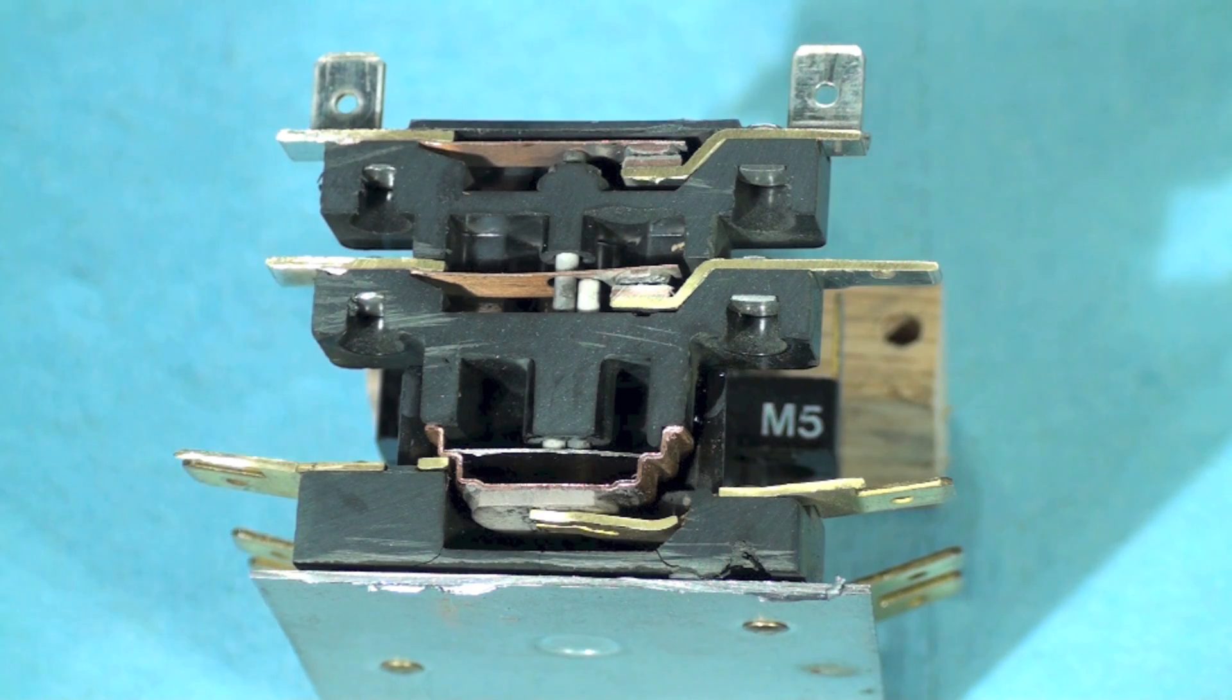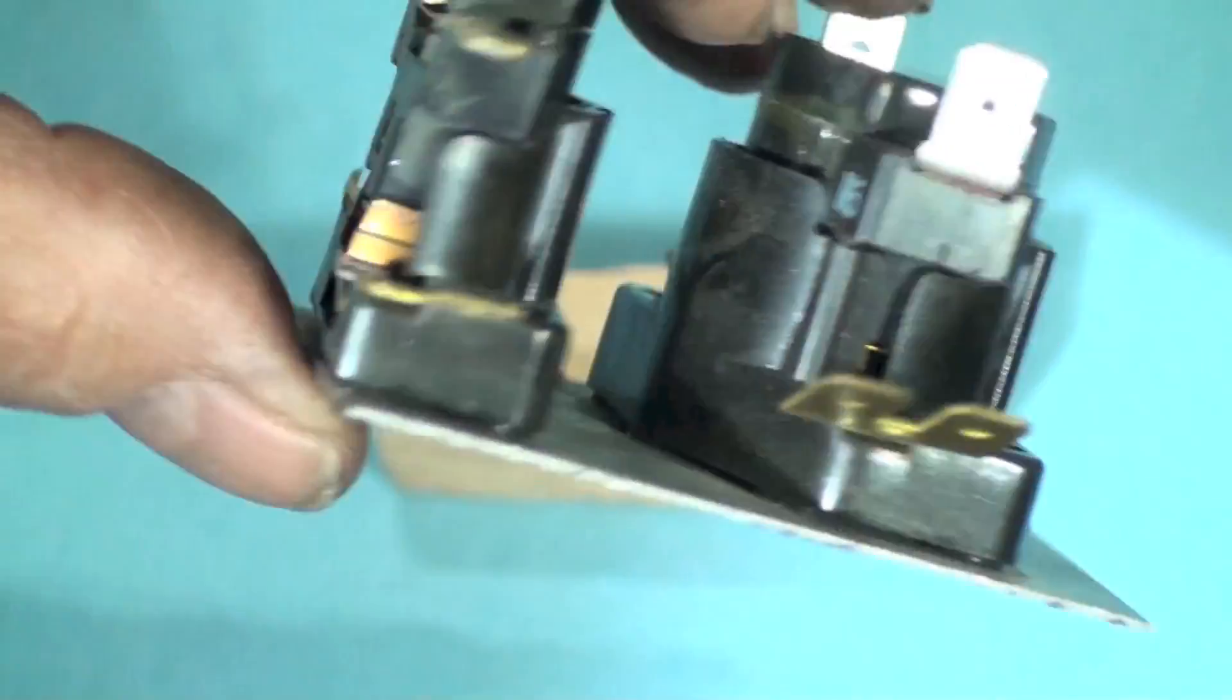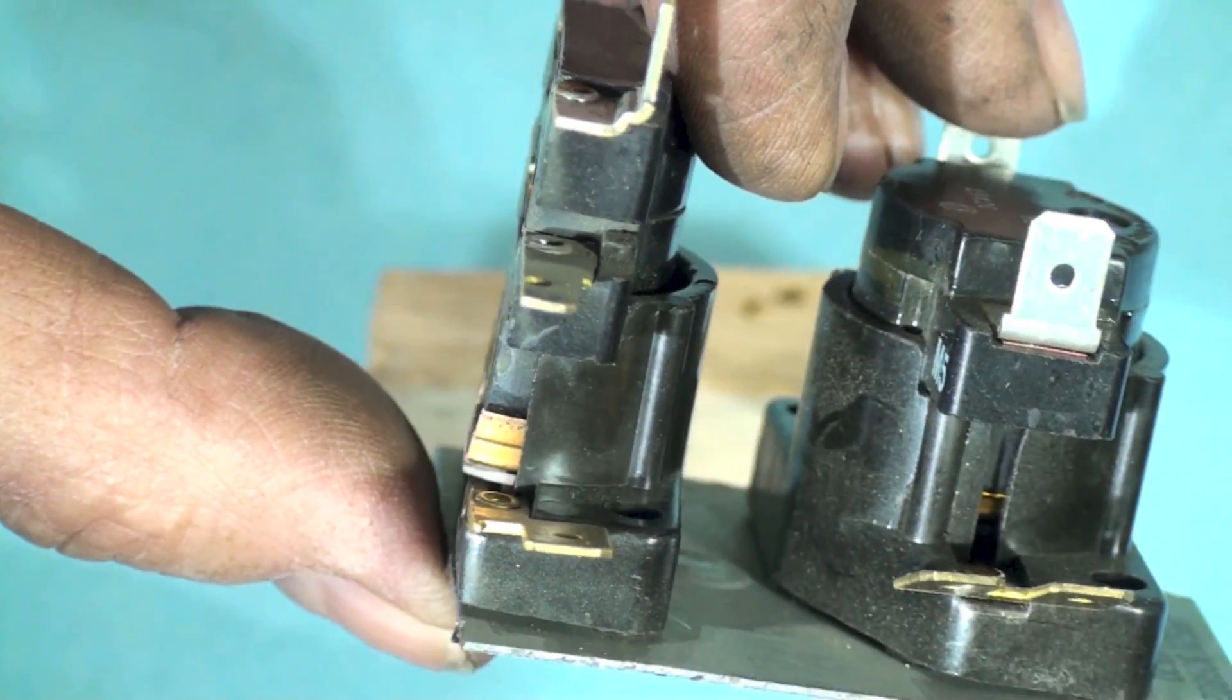This one here pops once and makes both of these sets of contacts. Some of them will pop the top set first, or close the top set first, and then the second set and then the third set and so on. This is actually a three-stack sequencer. You can see when I turn it over like that there's actually three stacks there.